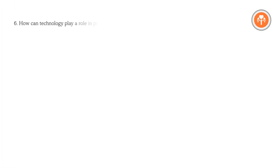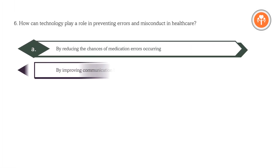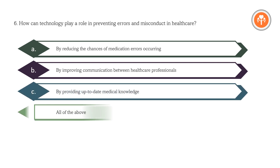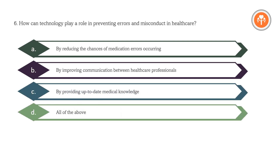How can technology play a role in preventing errors and misconduct in healthcare? A. By reducing the chances of medication errors occurring. B. By improving communication between healthcare professionals. C. By providing up-to-date medical knowledge. D. All of the above. Answer: D. All of the above.